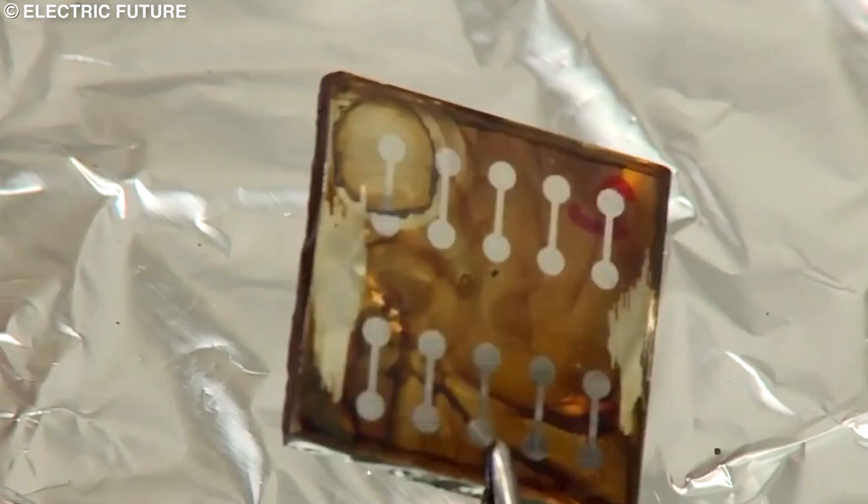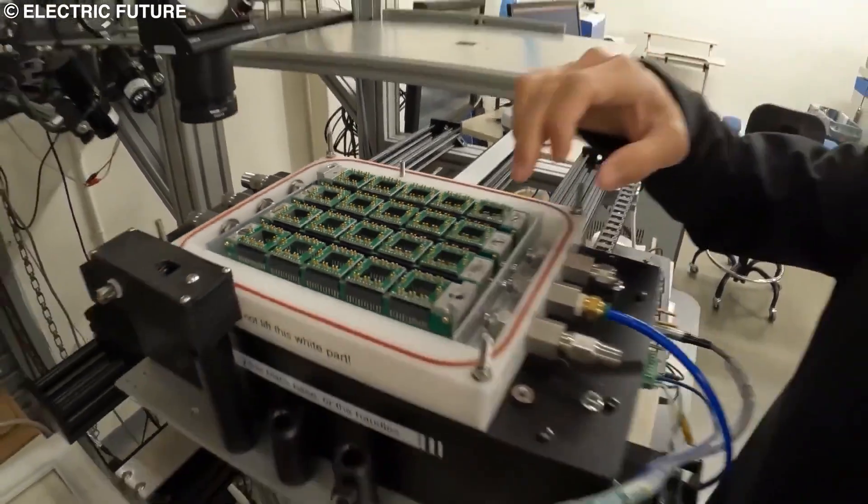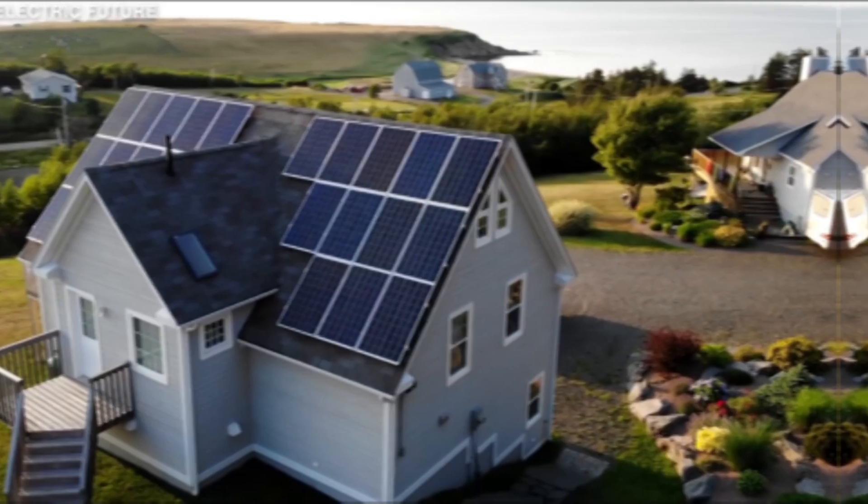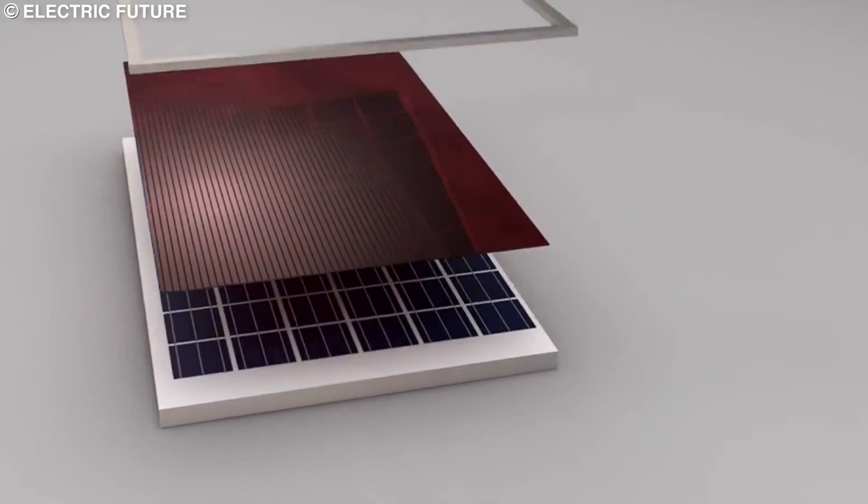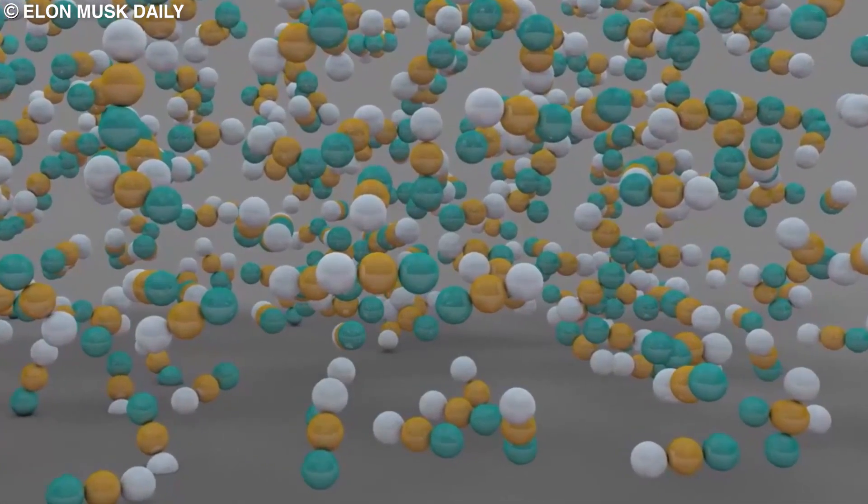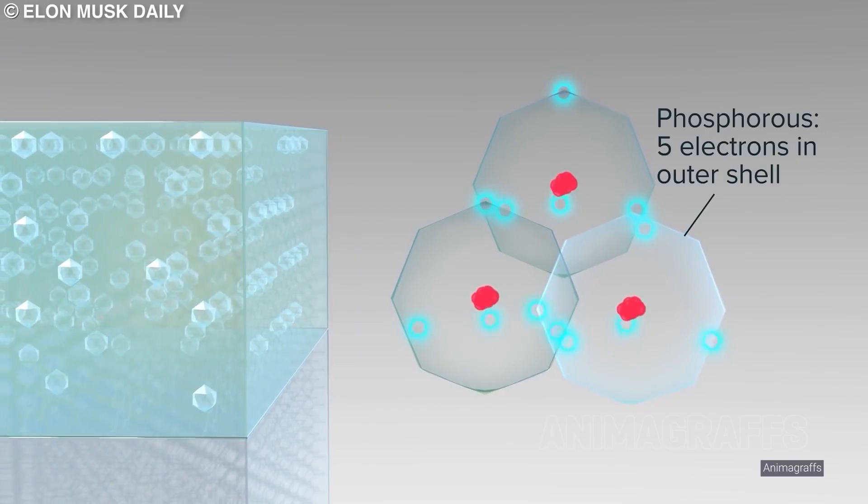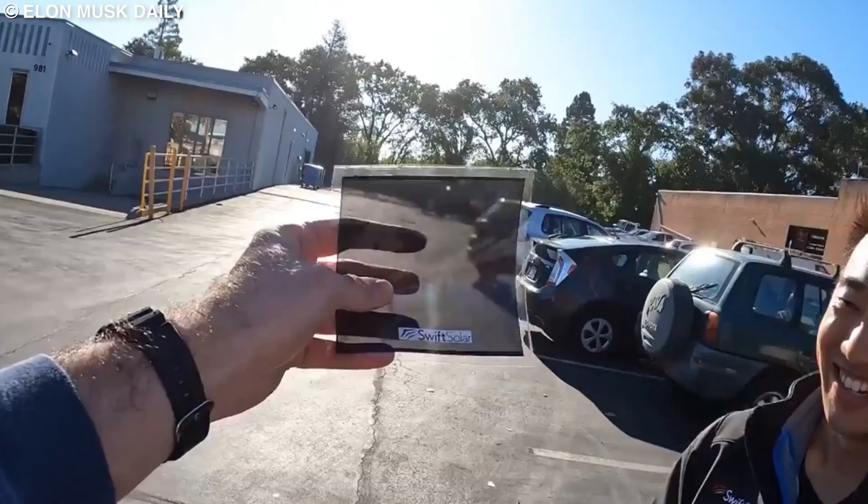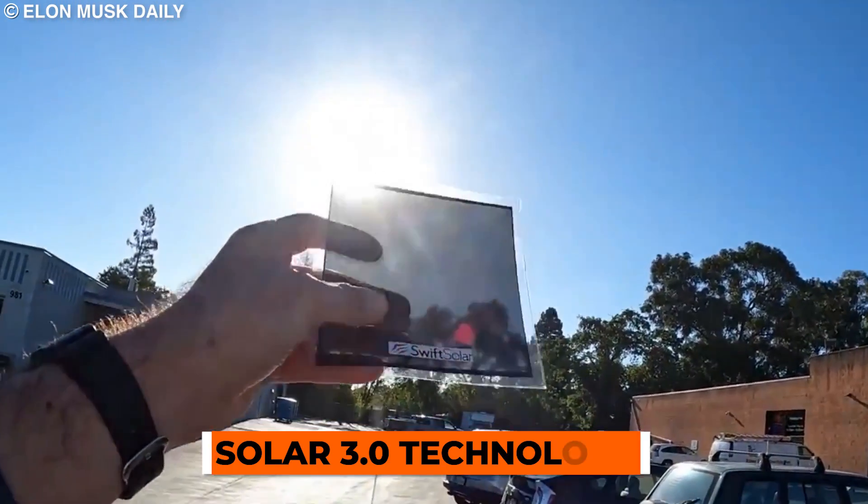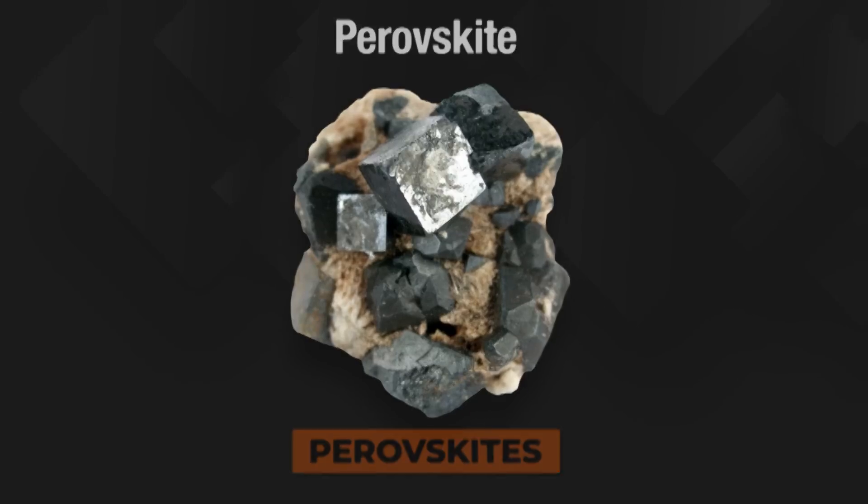But wait, what if I told you there's a material so efficient that it has the potential to replace all silicon-based photovoltaic systems in a few years? A lightweight material that's relatively much simpler to produce at a substantially cheaper cost. A solution that can be used to make a photovoltaic cell so thin that only a tiny amount of it can be used to power an entire building. Well, that's what the scientists are calling solar 3.0 technology, and it is a material called perovskites.